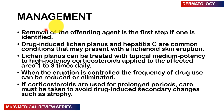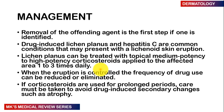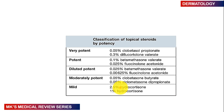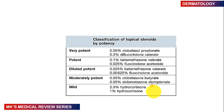When it comes to management, you should aim to remove the offending agent first if one is present. Drug-induced and hepatitis C-induced lichen planus are common conditions presenting with lichenoid skin eruptions. Lichen planus can be treated with topical medium to high potency corticosteroids applied to the affected area one to three times a day. When the eruption is controlled, the frequency can be reduced. If corticosteroids are used for prolonged periods, avoid drug-induced secondary changes such as atrophy. Topical steroids are classified by potency: very potent (e.g., clobetasol), potent (e.g., betamethasone), moderately potent, and mild (e.g., hydrocortisone).